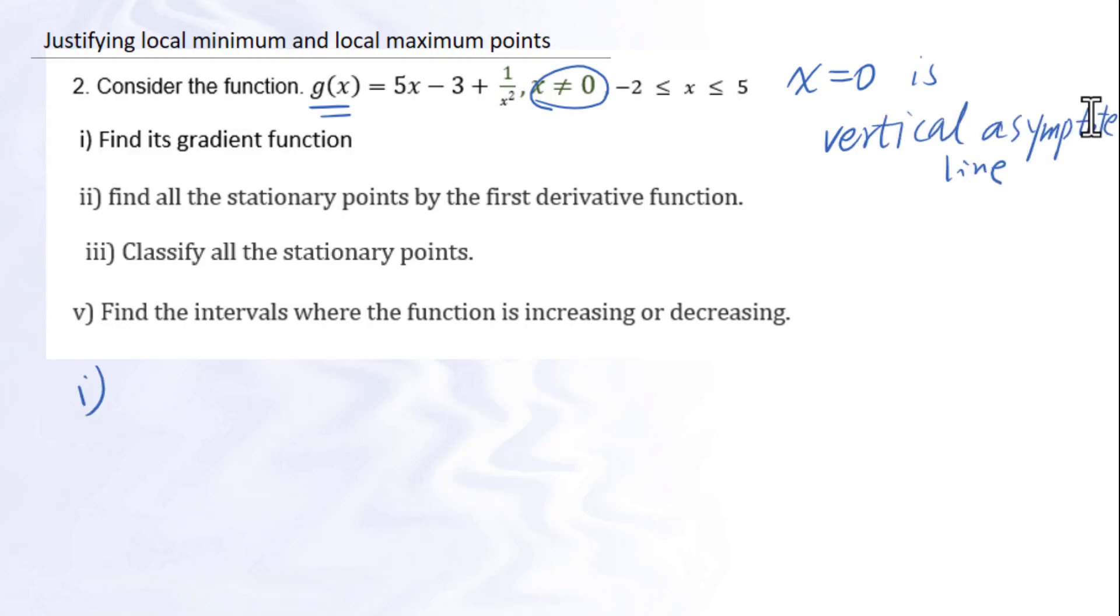One, find its gradient function. For the gradient function, we need to change this into single power. That is x to the negative second power. Because 1 over x to the nth power equals x to the negative nth power. So we have g prime of x equals 5x prime minus 3 prime plus x to the negative second power prime.